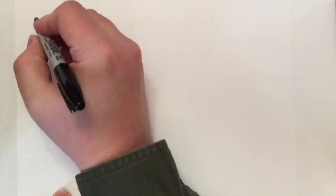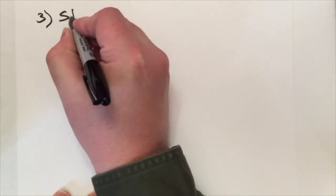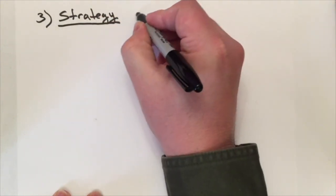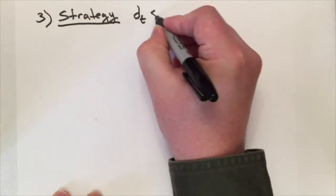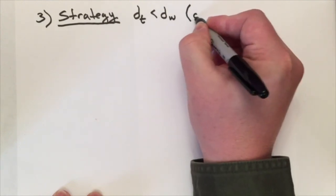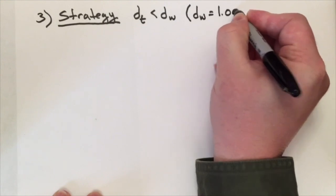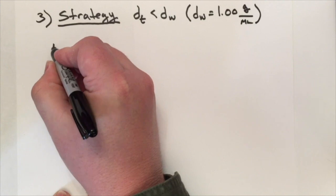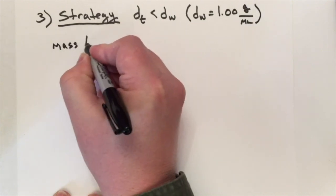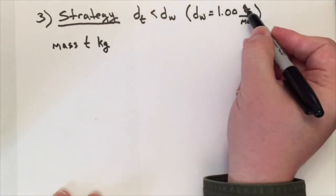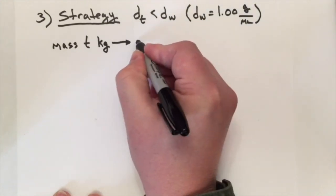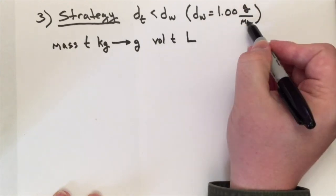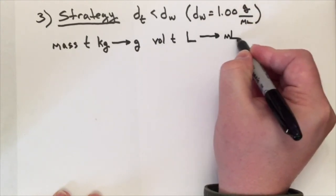This is a relatively simple problem, so the strategy will also be relatively simple. Essentially, we're going to determine the density of toluene and see if it's less than the density of water, which is equal to one gram per milliliter. We need to get the mass and volume of toluene. The mass is given in kilograms, but we need to convert it into grams for common units. We have to do the same for the volume, converting it from liters to milliliters.